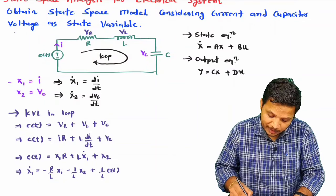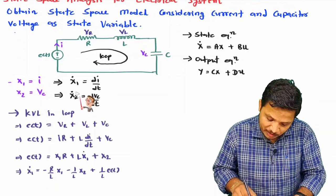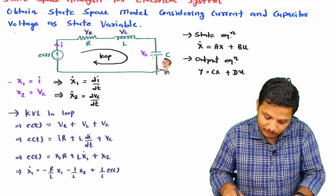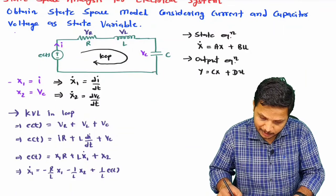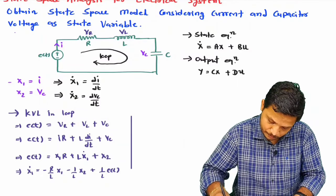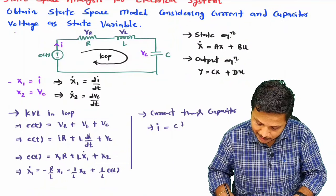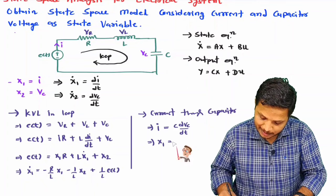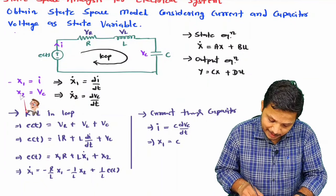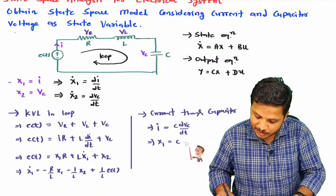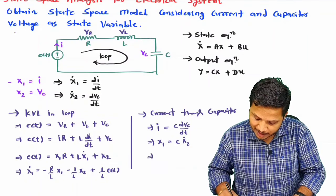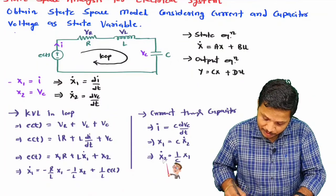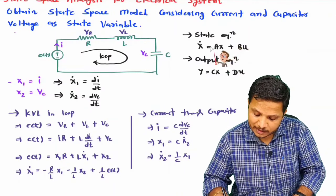Now let us identify the second differential equation in terms of x2_dot. We can directly consider the voltage across the capacitance, which has the relation: current I = C·dVc/dt. Here I is x1 and Vc is x2, so x2_dot = (1/C)·x1. Now we have two equations to form the state equation.